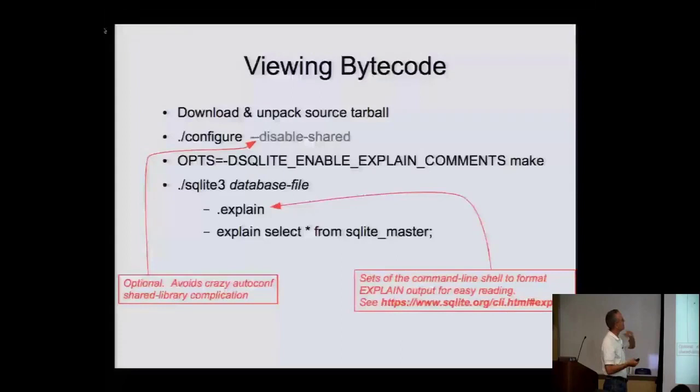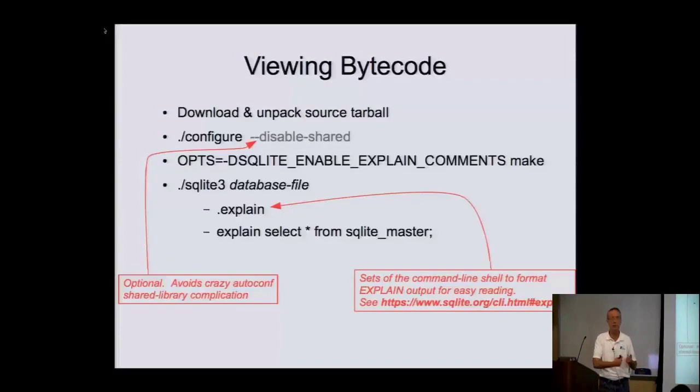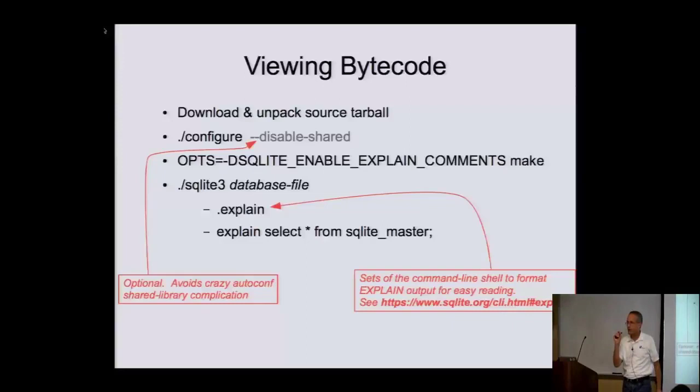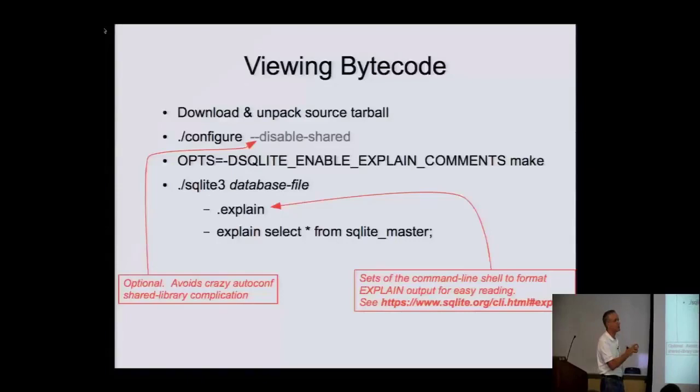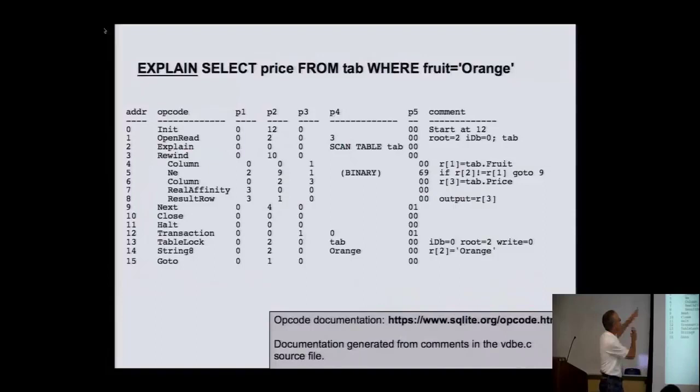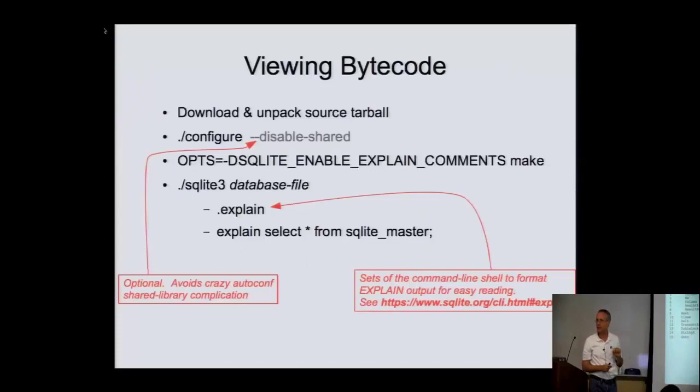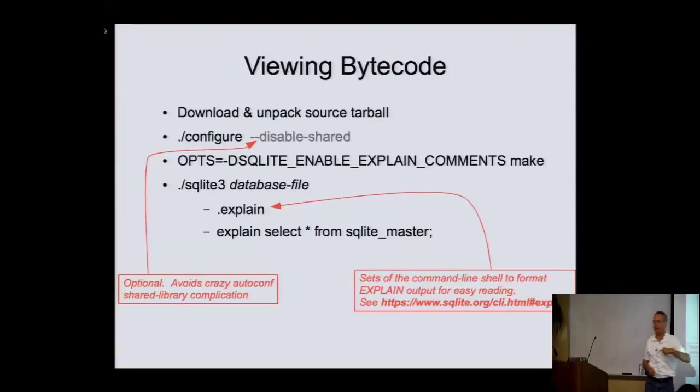Once you've compiled it, you've got a command line shell — a simple program that reads SQL statements and sends them to SQLite to be executed. This command line shell, SQLite3, treats lines starting with a dot as special commands it handles itself. The dot explain command sets up output formatting with nice neat columns and automatically indents loops so you can spot them more easily. Then you just type EXPLAIN followed by your query to see the bytecode.